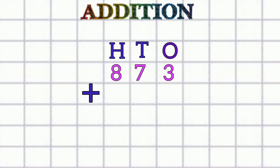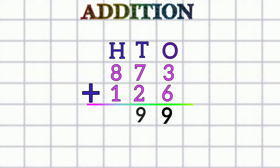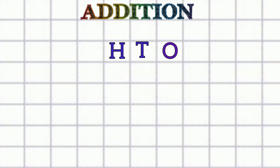Next example. First we add the ones: six plus three equals nine. Then the tens: seven plus two equals nine. Then the hundreds: eight plus one equals nine. So our answer is nine hundred ninety-nine.